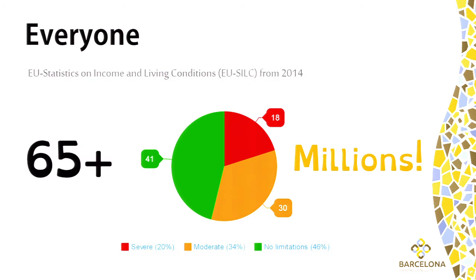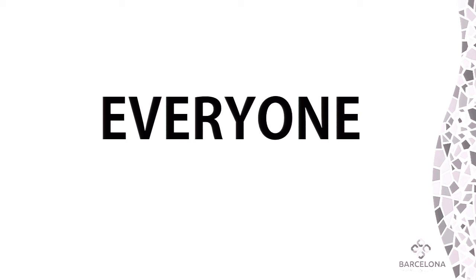If we go back to European statistics from 2014, when we count the population over 65, we have 50 million people. 18% of our elders in Europe have severe disabilities and another 30% have moderate disabilities. So it is for everybody.